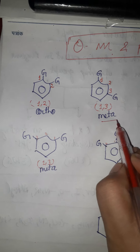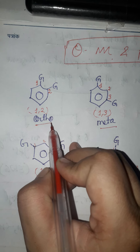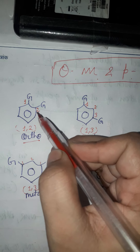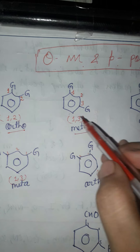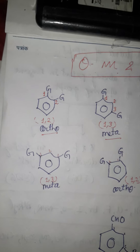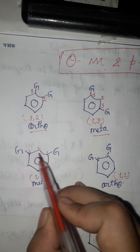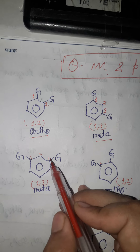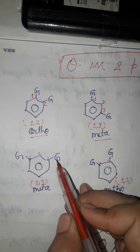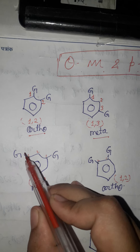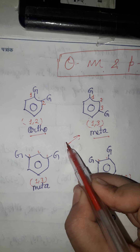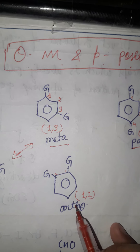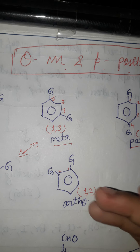If the groups are found on position number one and four, that position is called para. So: one and two is ortho, one and three is meta, one and four is para. In any type of compound, firstly you give the number to each position, and after giving the number you identify whether the groups are present at ortho, meta, or para position.